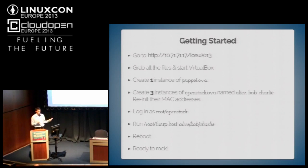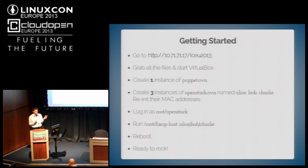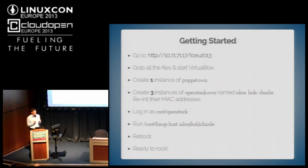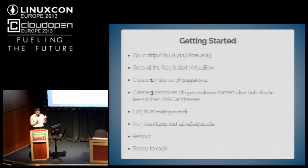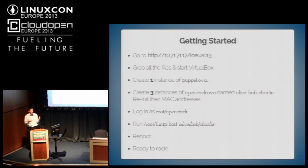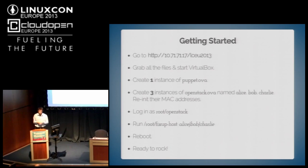For those who want to follow along: grab the files, start VirtualBox, create one instance of the puppet.ova virtual appliance, and create three instances of the OpenStack OVA virtual appliance. Name them Alice, Bob and Charlie, and make sure you re-initialize their MAC addresses when you create them. You can log into all these boxes as root with the password 'openstack'. For the OpenStack nodes, run the fix-up-host script from the /root directory — fix-up-host Alice, fix-up-host Bob, fix-up-host Charlie — which gives each appliance a different network configuration. Once you reboot, you're ready to go. The puppet node comes up pre-configured as a puppet master.